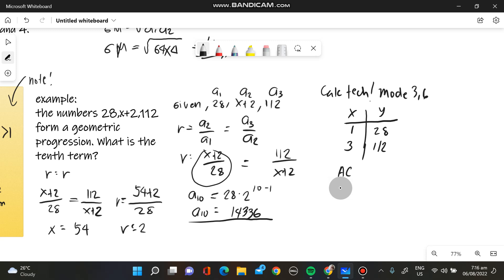Press AC and then shift, 1, 5, 5. So we will arrive with the value of A sub 10 which is equivalent to 14,336 as well.